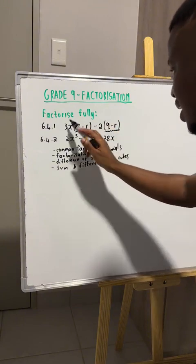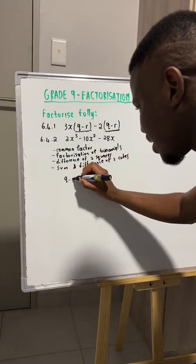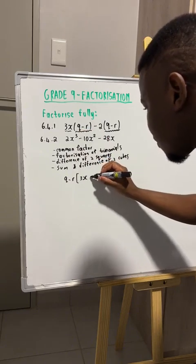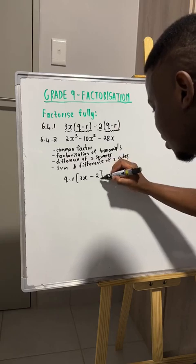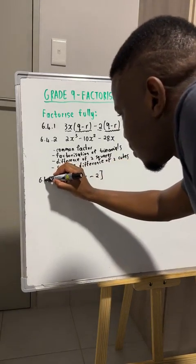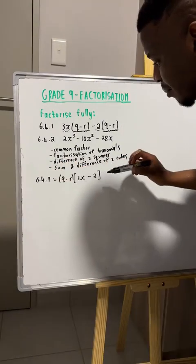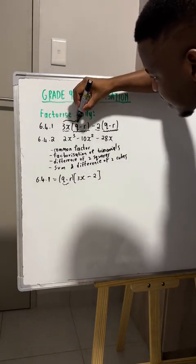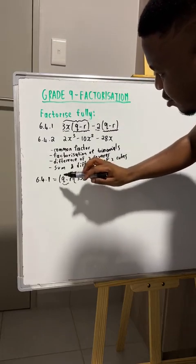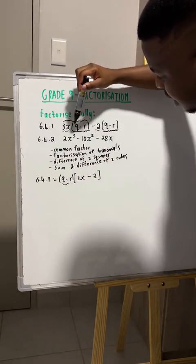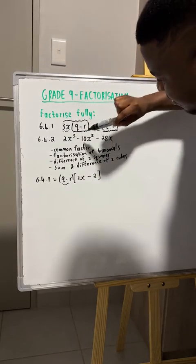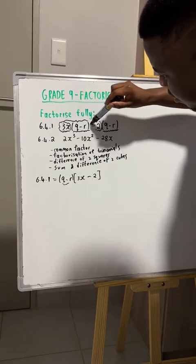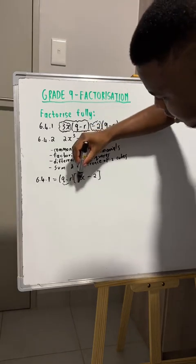To factorize this expression, we will simply take out (q minus r), and you will be left with 3x for the first term, minus 2 for the second term. Seeing the remainder after you have taken out your common factor is really simple — all you need to do is take your first term and divide it by the common factor. If we take 3x(q minus r) and divide by (q minus r), we are simply left with 3x, and for the second term we are simply left with negative 2.